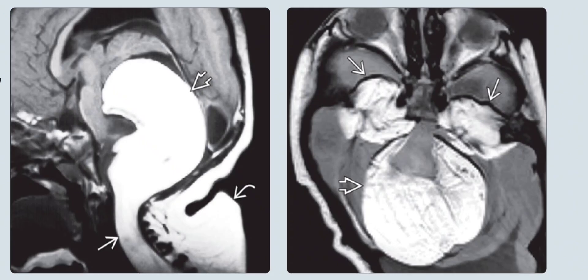On the left is the sagittal T1-weighted MRI in the same patient, obtained 3 years later, showing a very large suboccipital lipoma. The foramen magnum lipoma has massively increased in size, now occupying most of the posterior fossa, and extends inferiorly into the upper cervical spine.